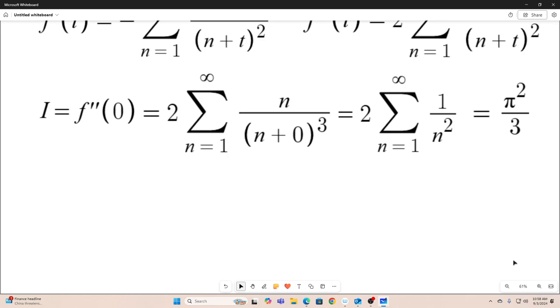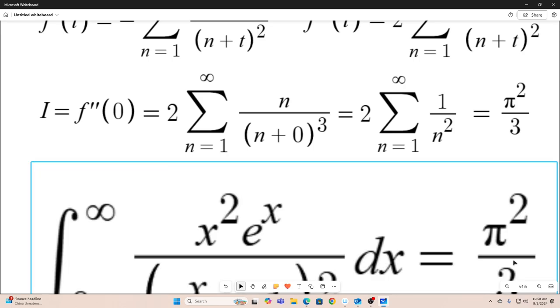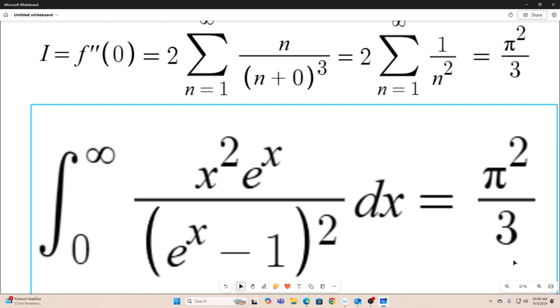So in conclusion, there we go. So that integral, the integral from zero to infinity of x squared e to the x over e to the x minus one all squared dx is equal to pi squared over three. Alright guys, I hope you enjoyed that. And we'll see you next time.